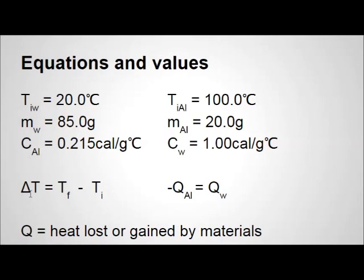We can calculate a change in temperature by subtracting the initial temperature from the final temperature. Q represents heat lost or gained by materials. The heat lost by the aluminum — that's why we'll have a negative sign — will be equal to the heat gained by the water. The aluminum has been heated to a very high temperature and the water is colder, so when we put the hot aluminum into the cold water, the water will gain heat energy, the aluminum will lose heat energy, and we've assumed those values will be equal to each other.